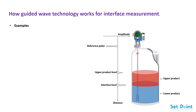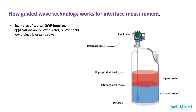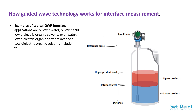Examples of typical GWR interface applications are oil over water, oil over acid, low dielectric organic solvents over water, and low dielectric organic solvents over acid. Low dielectric organic solvents include toluene, benzene, cyclohexane, hexane, turpentine, and xylene.